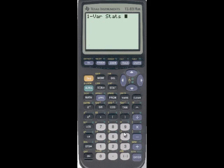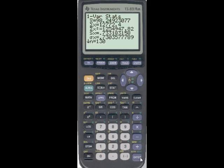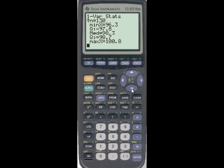One var stats. Press enter. You can press L1 if you want, so second L1, and press enter. And then just scroll on down, and you will see the five-number summary: Min, Q1, median, Q3, and max.